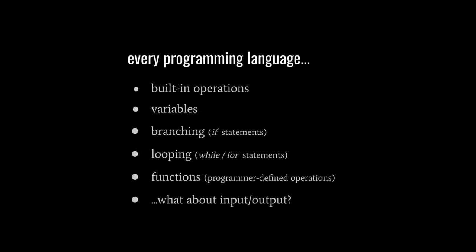Now, as for actual programming languages, the mechanisms they virtually all have in common are: they all have some set of built-in operations, they all have variables, they all allow you to branch with usually what are called if statements, they all allow your code to loop with what are called usually while or for statements, and they all have functions, which are basically operations you yourself define. With just these few mechanisms, you actually have a complete programming language. The question, though, is what about input and output? We'll explain how that's done when we get to the end.